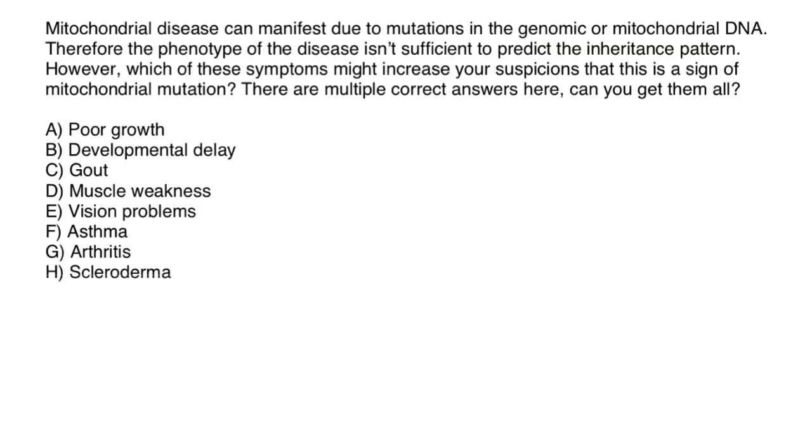And here's one more question. Mitochondrial disease can manifest due to mutations in the genomic or mitochondrial DNA. Therefore, the phenotype of the disease is not sufficient to predict the inheritance pattern. However, which of these symptoms might increase your suspicions that this is a sign of mitochondrial mutation? There are multiple correct answers here. Can you get them all? And here are the variants to choose from. Before I go over this list, I want to bring to your attention that mitochondrial genetic disorders can be due to genomic or nuclear genome or mitochondrial DNA.